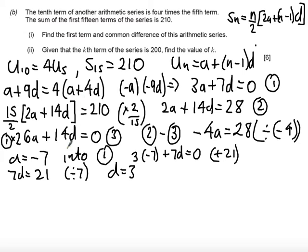OK so part ii then says given that the kth term of the series is 200 find the value of k so what we know is that uk equals 200. So in other words what we have here is a and what we're going to do again here is we're just going to use the nth term is a plus n minus 1 times d we're just going to use that.